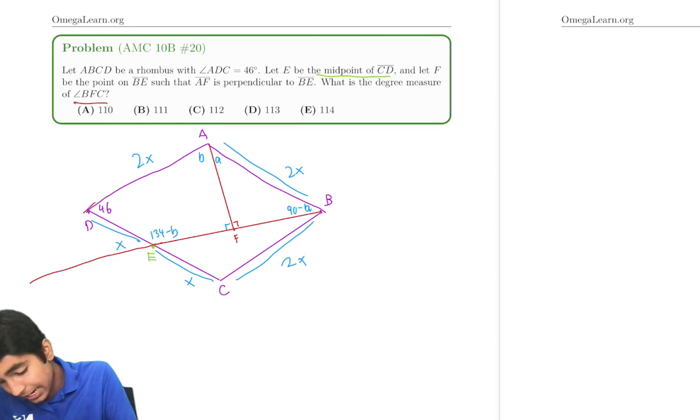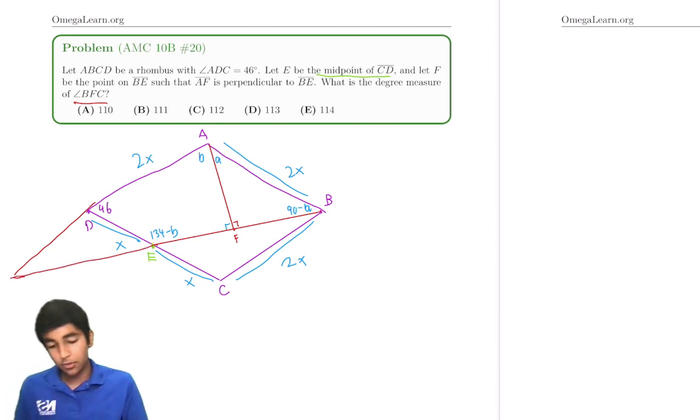BE, such that it intersects like that. Let me draw that again. It extends so that it meets right there. Now, what is this? Well, if we extend AD,